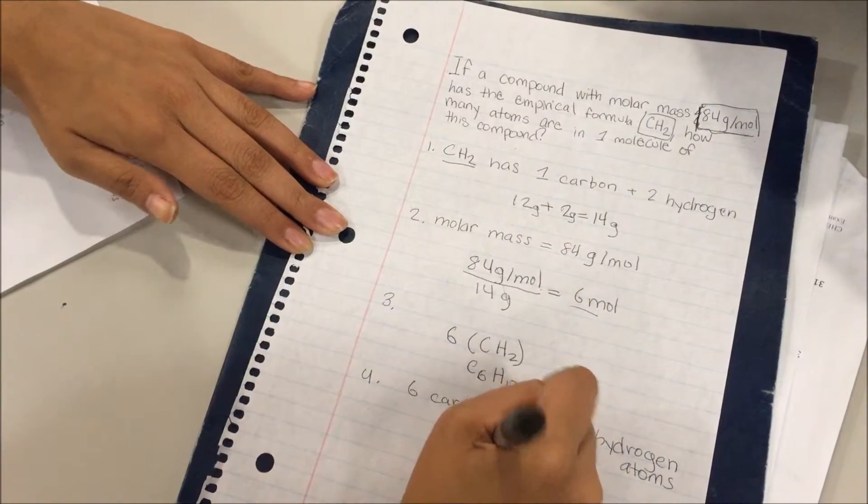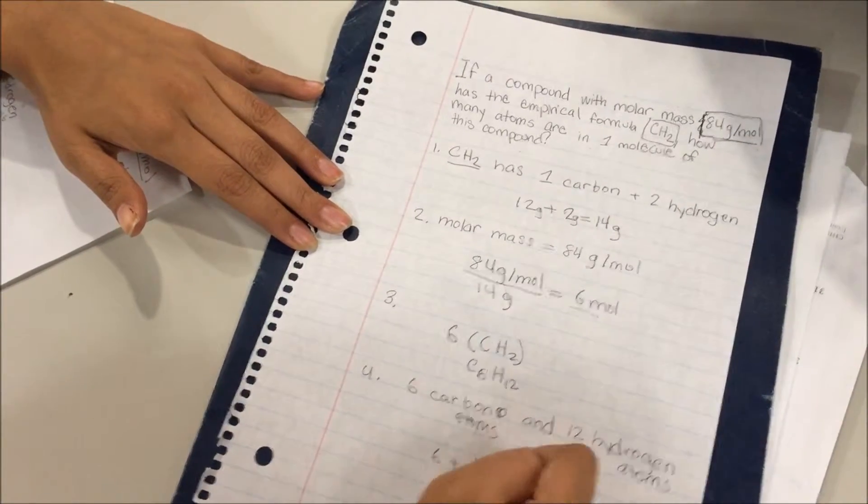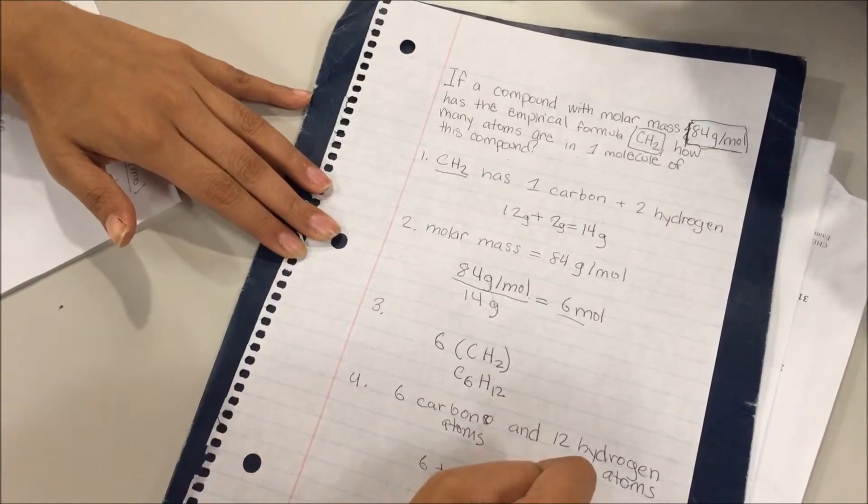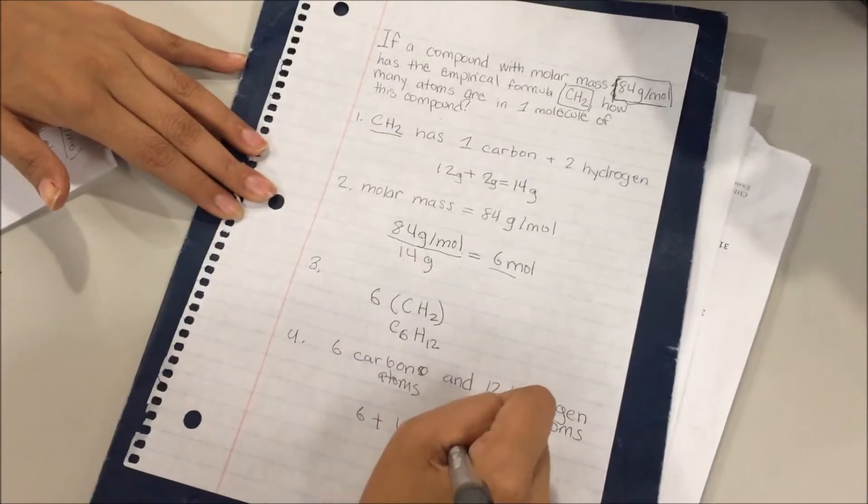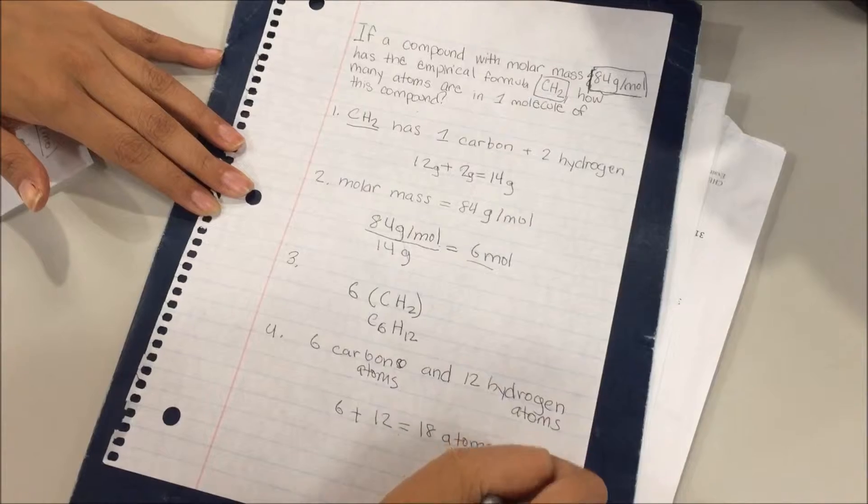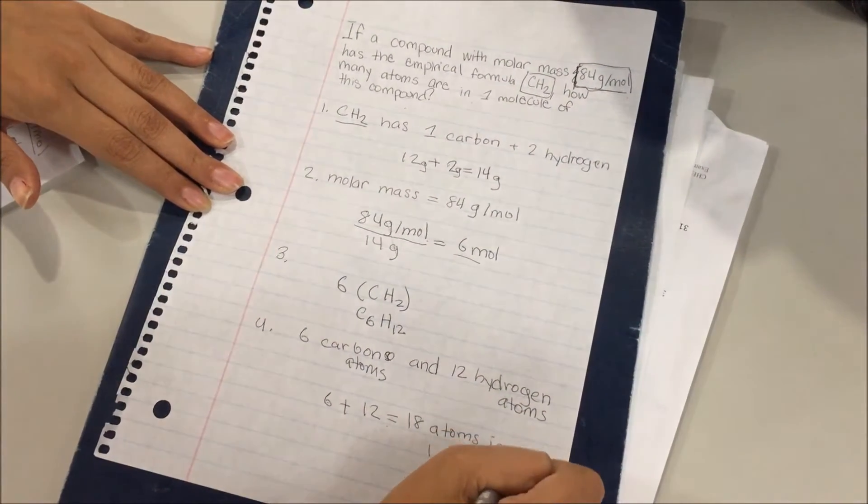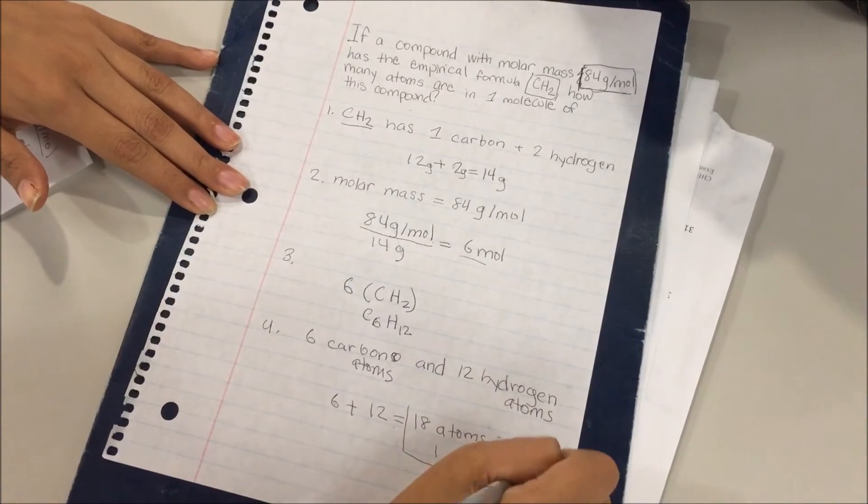Simply, you add 6 plus 12. So 6 atoms plus 6 atoms equals 18 atoms in this one molecule. And that is your answer.